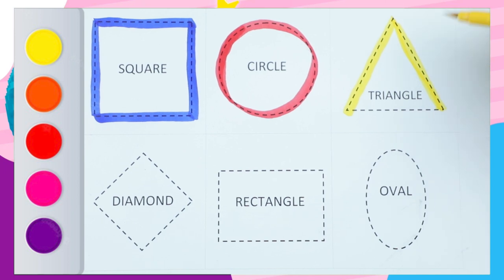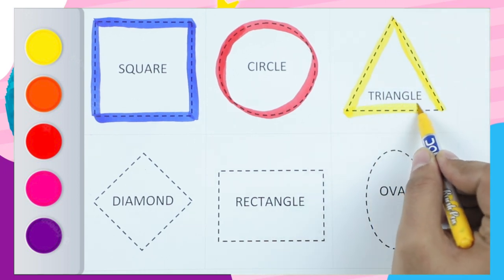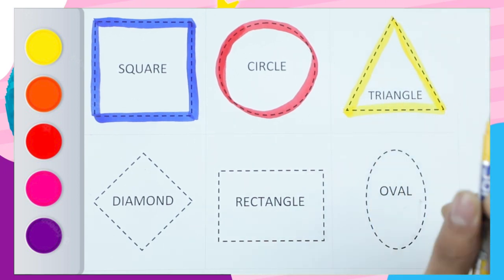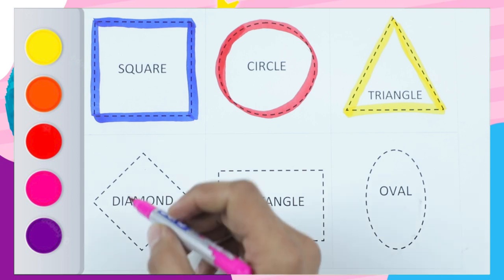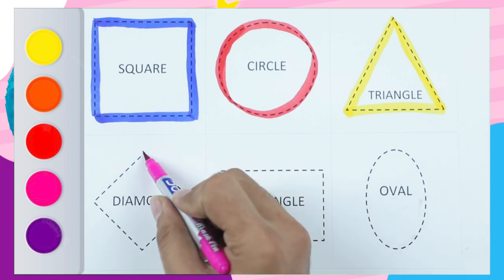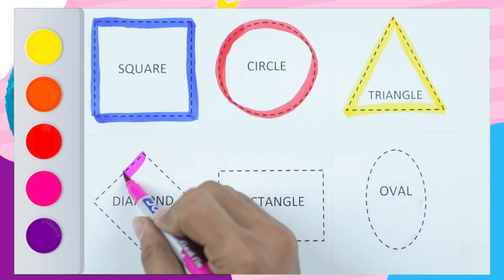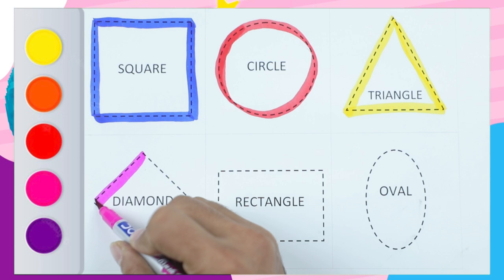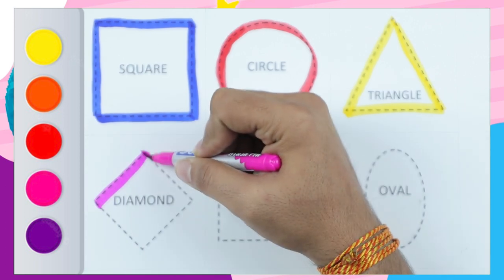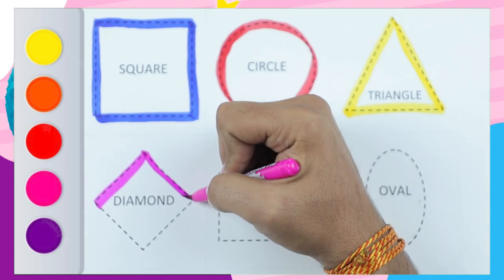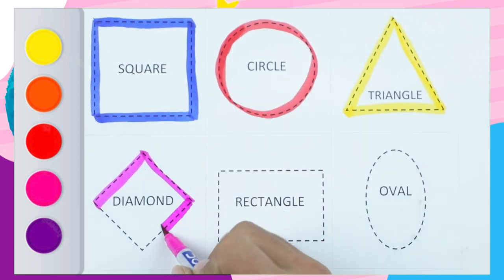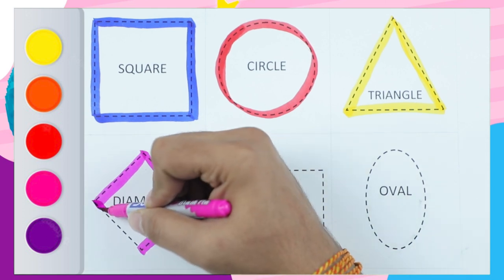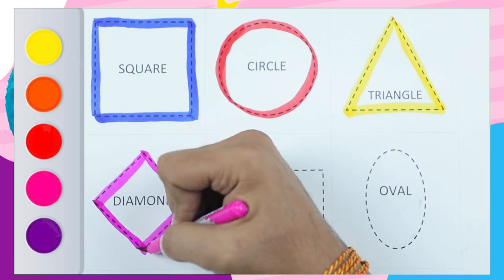And sleeping line. It's a yellow color triangle. Diamond shape — pink color diamond shape. Sliding line, sliding line, sliding line.